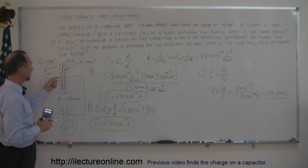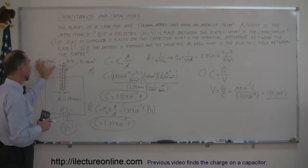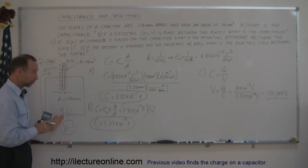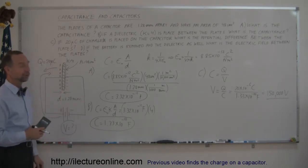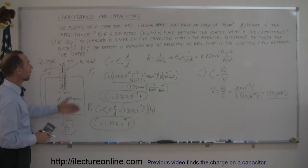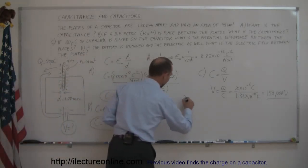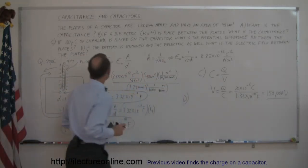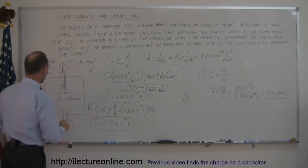That means for this small capacitor — 48 square centimeters is relatively small — if you want to place a relatively large amount of charge on it, you need an enormous push: a battery providing 150,000 volts. For part D, the battery is now removed and the dielectric as well.